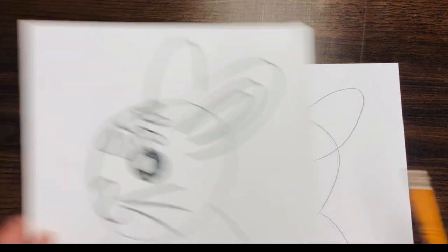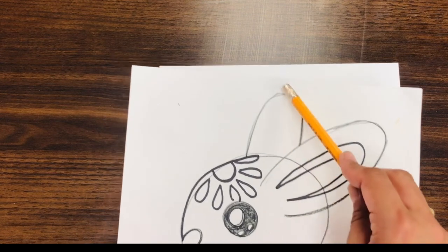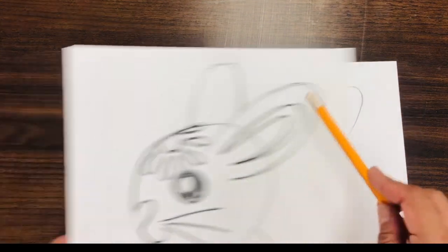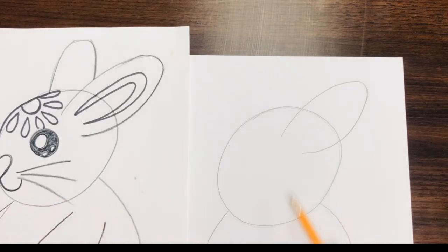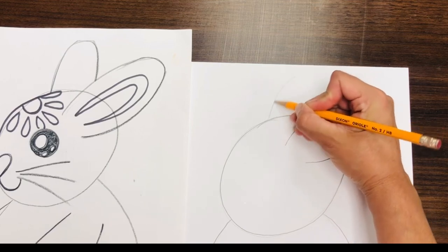The other ear is hiding behind the head and behind this ear. So it's going to be the same shape that you drew, except a little bit smaller. Like I said, you can make them pointy if that's the rabbit you are going for.